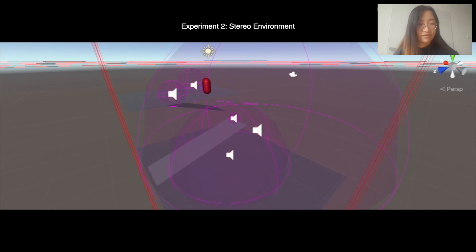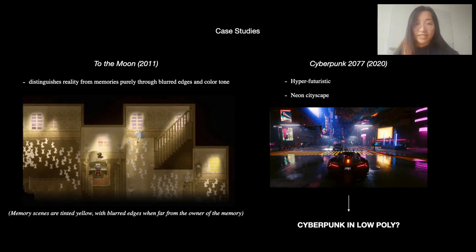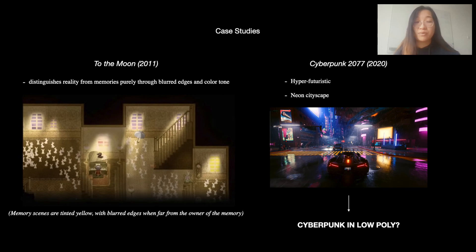I experimented with the VR stereo environment by inviting several classmates to navigate a VR sound space I built, blindly. Most participants were surprised by the level of immersion sound can facilitate, but they also preferred seeing some visuals added in the space as hints. For my project study, I played the game 'To the Moon,' where two doctors dive into a dying man's memory to accomplish his last wish. I learned how the game distinguishes reality from memories purely through blurred edges and color tone. I also studied the hyper-futuristic neon cityscape cyberpunk aesthetic from the game 'Cyberpunk 2077.' This art style inspires me, though the VR world I am building will most likely be low poly. I will need to make good use of lighting and post-processing to create a cyberpunk-style low poly VR experience. And that concludes my final presentation for Capstone One — thank you for listening.